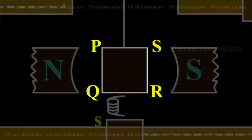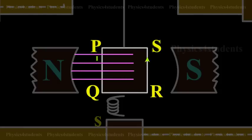Theory: Let PQRS be a single turn of the coil. A current I flows through the coil. In a radial magnetic field, the plane of the coil is always parallel to the magnetic field.